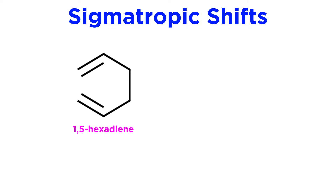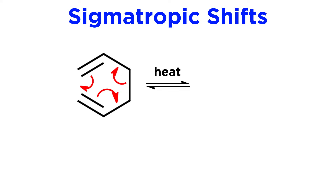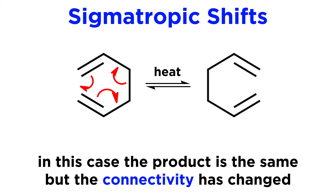First we have 1,5-hexadiene. When heated, cyclization of these two pi bonds and this sigma bond can occur, to produce what is still the same compound, but we can see that the connectivity of the atoms has shuffled. These two carbons marked with an asterisk will help us see that this is not simply a rotated view of the original structure.